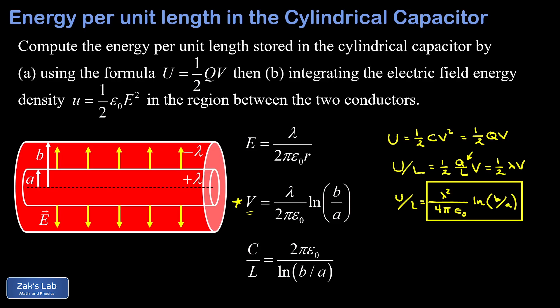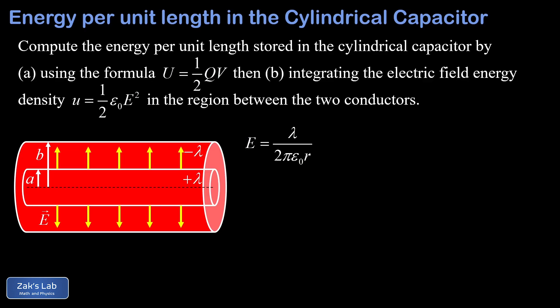But it would be a shame to quit here because there's a really cool alternative solution to the problem based on the concept of electric field energy density. The idea here is that knowing the electric field between the two conductors, we can use our old formula for the energy density stored in the electric field. Little u for the energy density is equal to 1 half epsilon 0 times the electric field magnitude e squared.